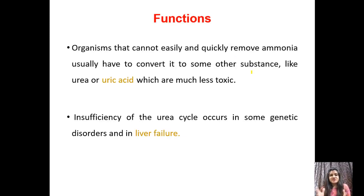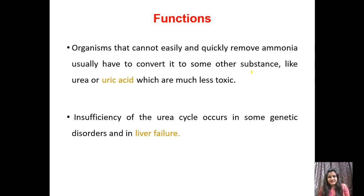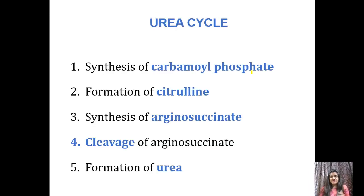The function of the urea cycle: organisms that cannot easily and quickly remove ammonia usually have to convert it into some other substance, like urea or uric acid, which are much less toxic. Insufficiency of the urea cycle occurs in some genetic disorders, like liver failure.